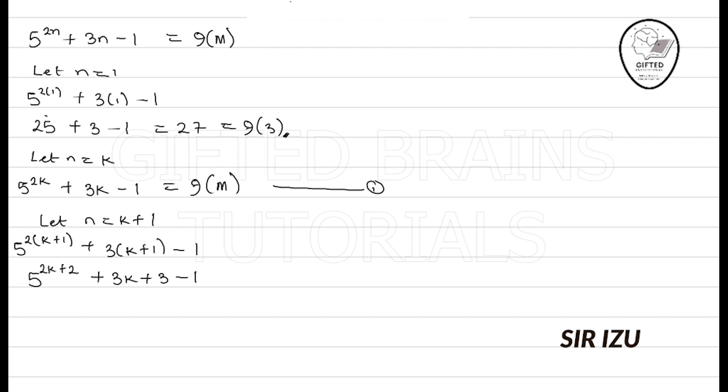And so, this 5^(2k+2) can be written as 5^(2k) × 5^2 by indices. And so, plus 3k + 2.